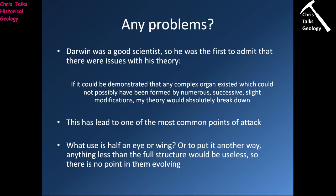Darwin was a good scientist and was the first to admit there were issues with his theory. He said: if it could be demonstrated that any complex organ existed which could not possibly have formed by numerous successive slight modifications, my theory would absolutely break down. His model suggests that animals change slowly in lots of small incremental steps. However, if you can find something that can't be explained by slow incremental change over time, then evolution falls to pieces as a theory.